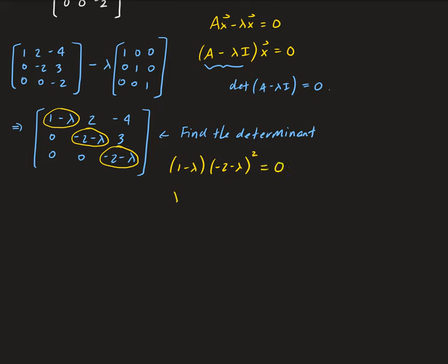From this we get lambda equals 1, and lambda equals negative 2 — and that has multiplicity two because it's raised to the second power. Recalling from pre-calculus, this is acting as a double root.